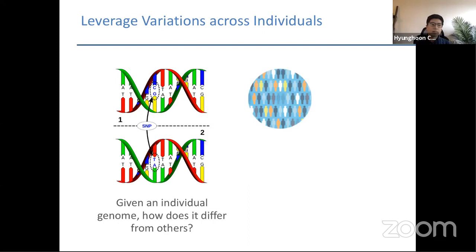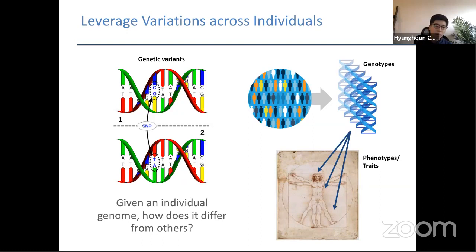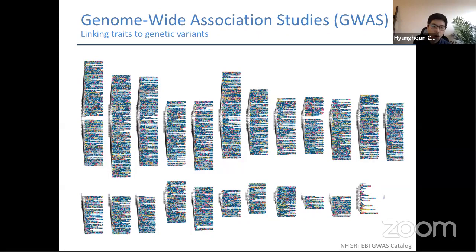One thing we can do with such a platform is to look at natural variation in the genome across different individuals, including things like single nucleotide polymorphisms or SNPs, which refer to single-letter differences between individuals' genomes. The idea is to collect this information from a large population to understand how genetic differences lead to differences in human conditions. These elements that differ between individuals are called genetic variants; the set of variants defining one's genome are called genotypes, and the emergent biological properties we may want to study are called phenotypes or traits.